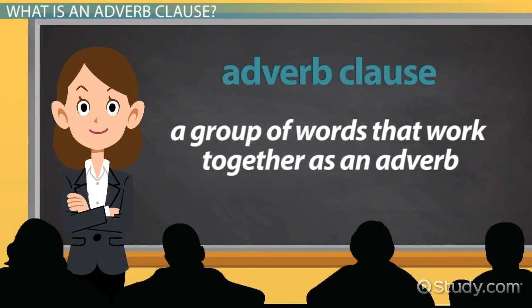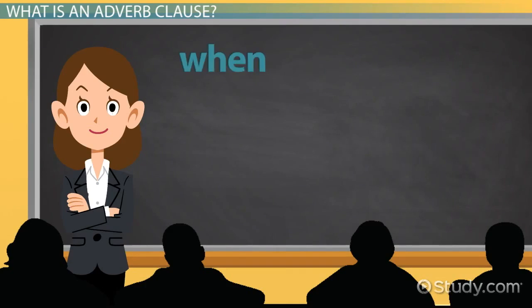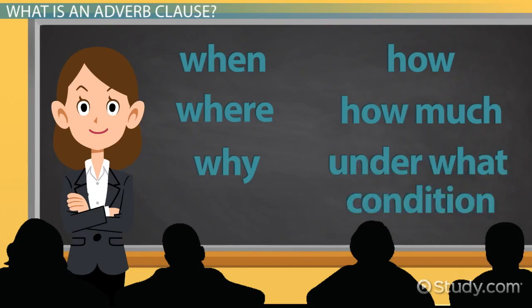The group can modify verbs, adjectives, and adverbs, and it does so by telling us when something is, where something is, why something is happening, how something is happening, how much there is of something, and under what condition something takes place.